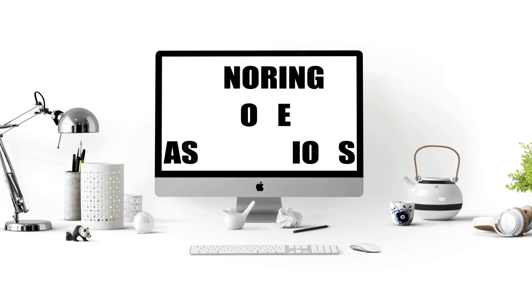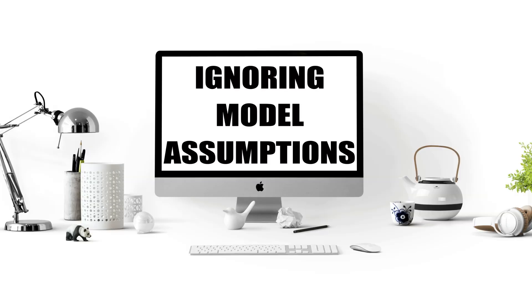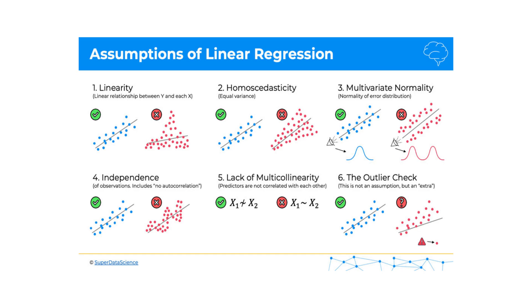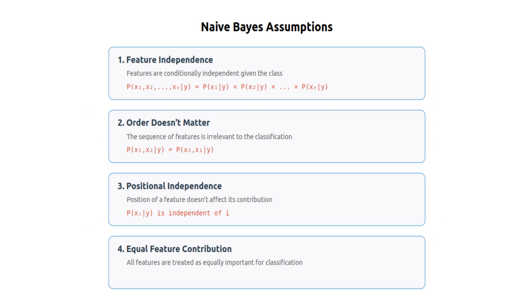Ignoring model assumptions. Each ML algorithm comes with underlying assumptions. Linear regression assumes linear relationships and independent errors, among other things. Naive Bayes assumes feature independence. Violating these assumptions leads to poor model performance.